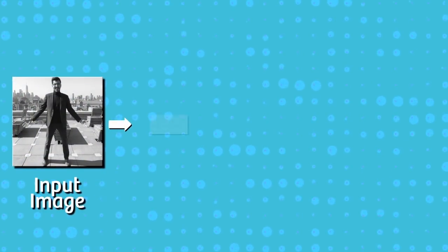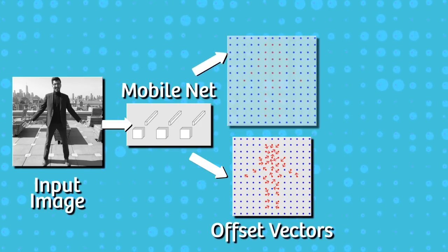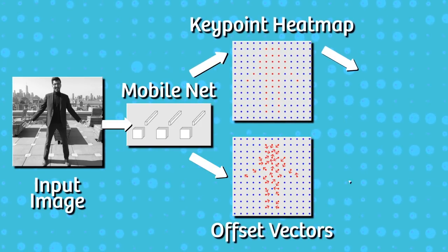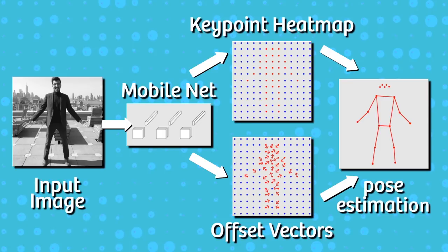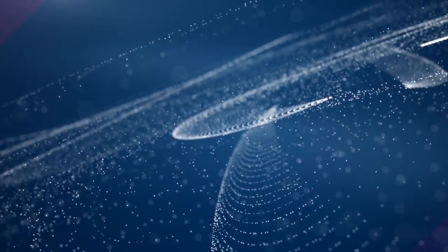PoseNet is a modified version of MobileNet specifically for detecting human poses. It outputs a key point heat map and a set of offset vectors. Both are a matrix of values that correspond to a person's pose estimate. It uses a few extra matrix operations to retrieve the final confidence scores for each of the key points and then constructs a stick figure using them.